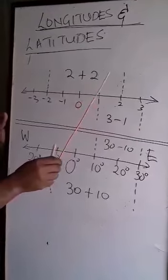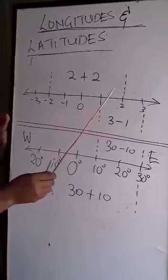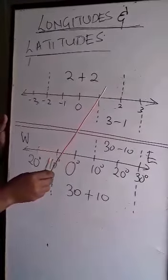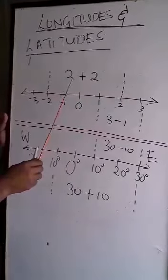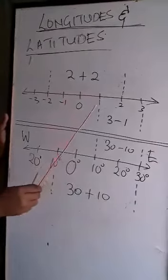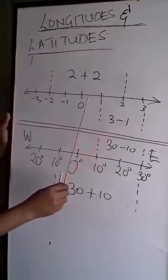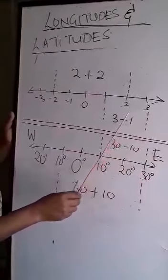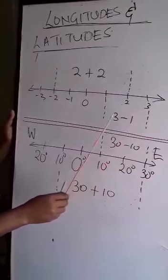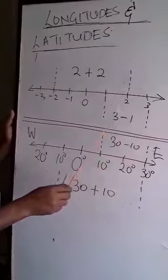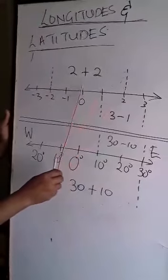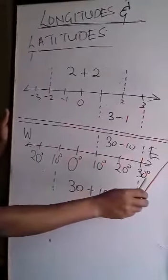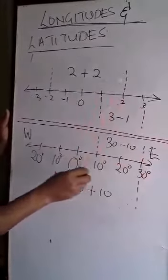That's why we are saying points lying across the meridian, their difference is the addition. But if you look at points within the same side of zero, the difference is like, for example, the difference between three and one is three minus one.